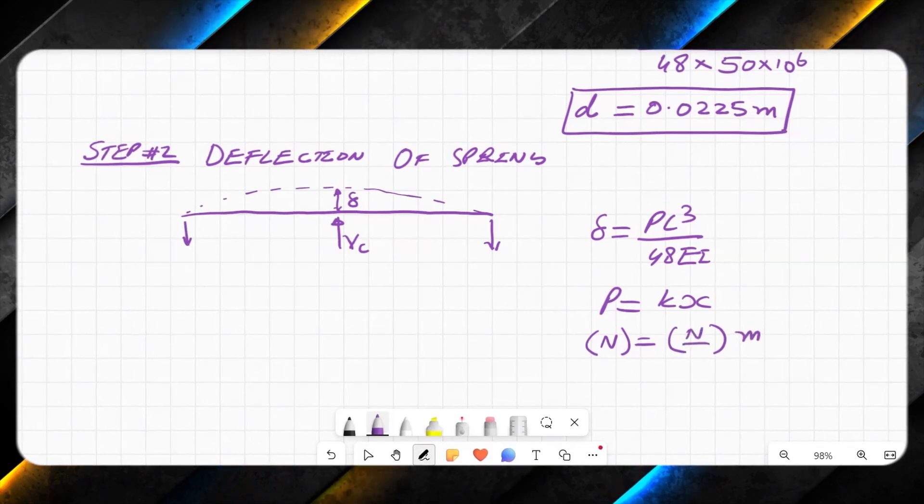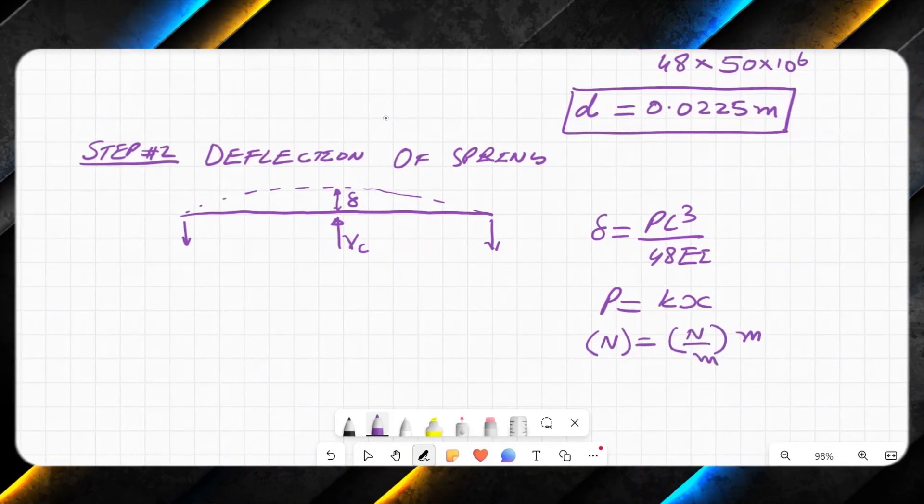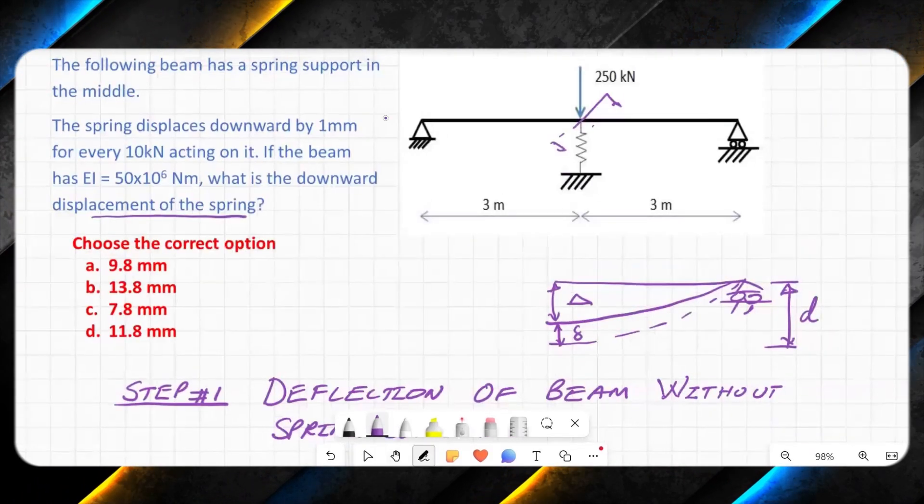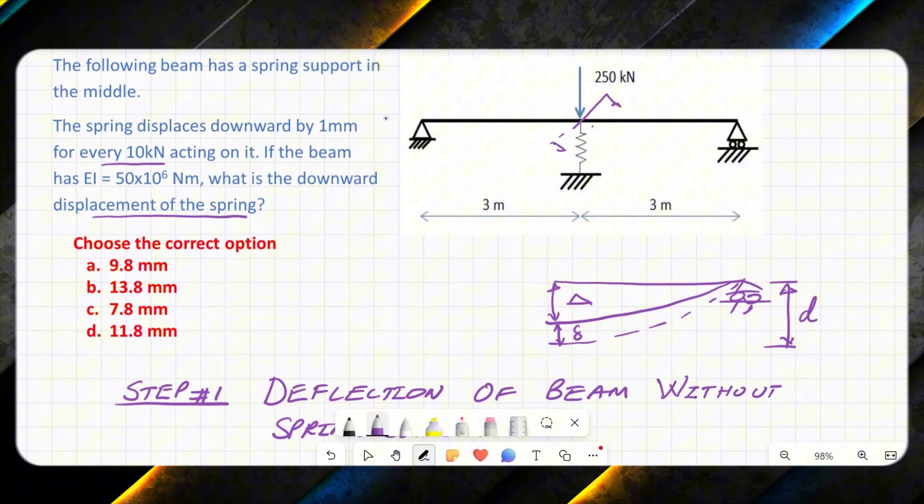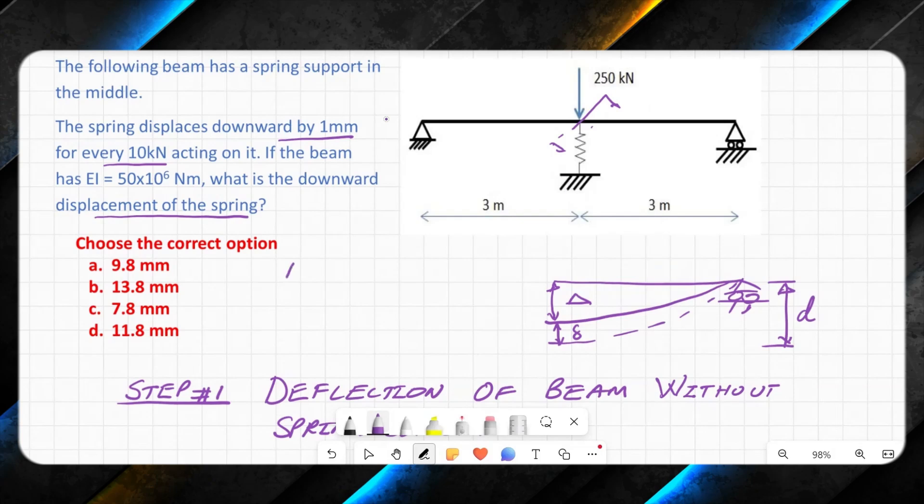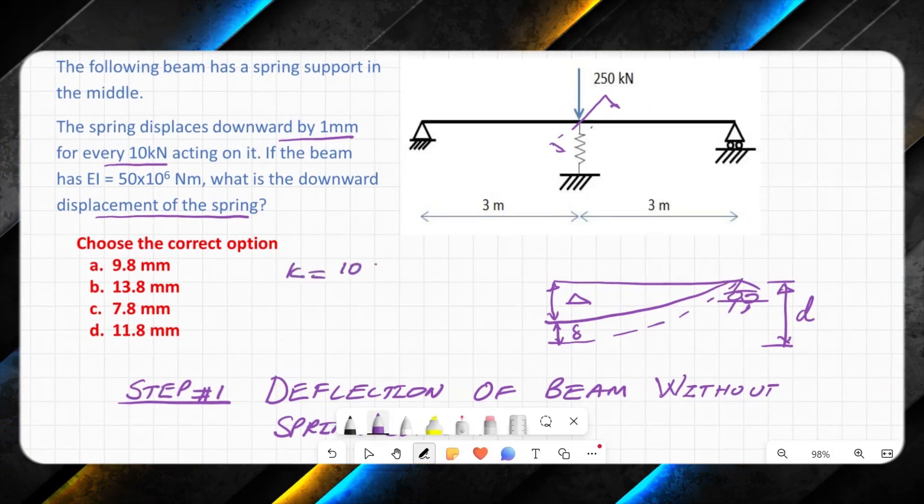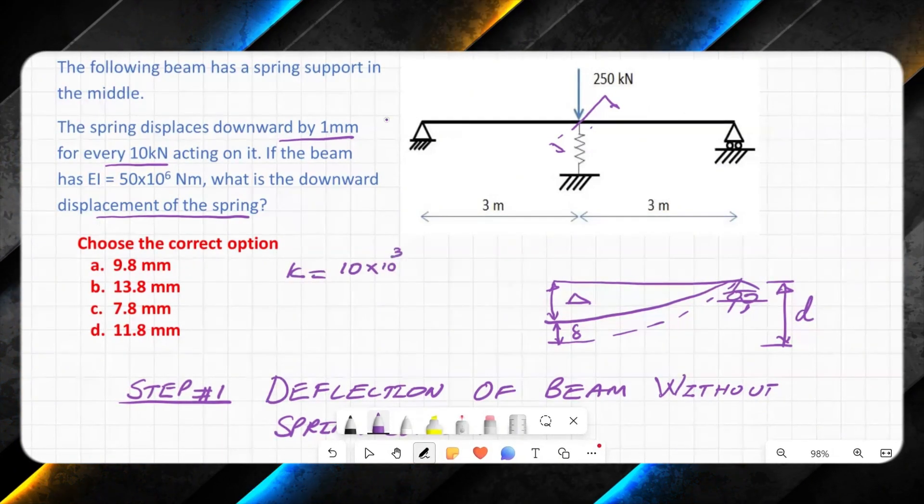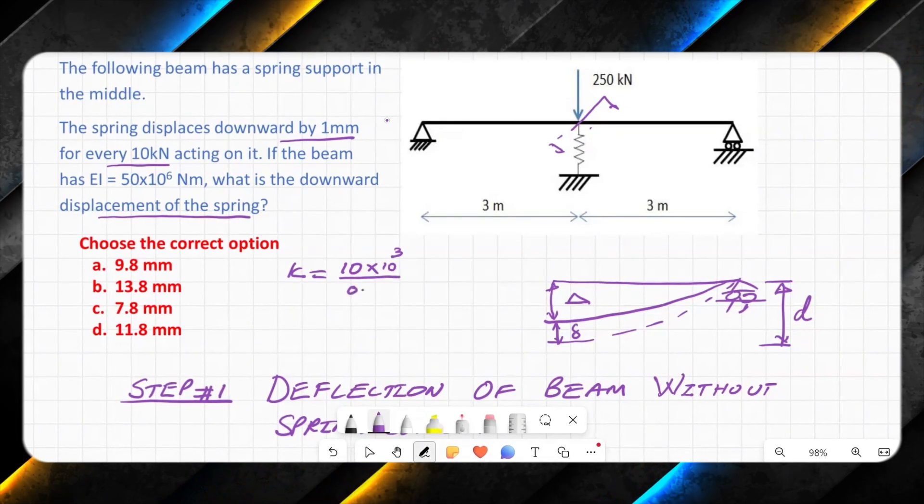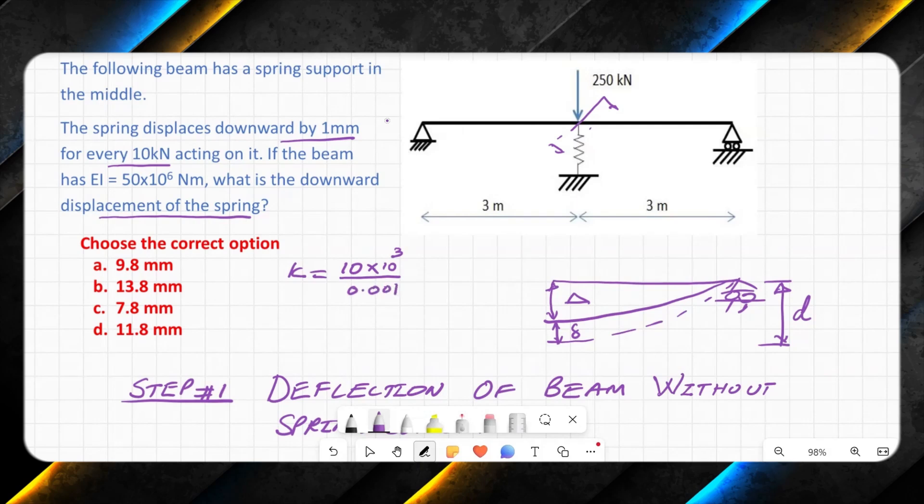Here newton is the unit. Here there is something in meters, so unit of the stiffness should be newton per meter. Stiffness of spring is given to us, which is for every 10 kilonewton, it's 0.1 mm downward. So this is stiffness—for every 10 kilonewton, 10 × 10³, I have a downward displacement of 0.001 meters.